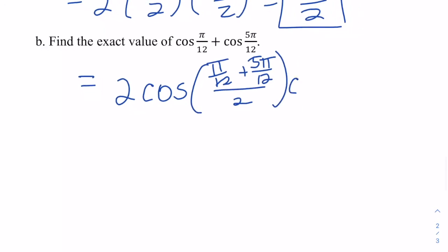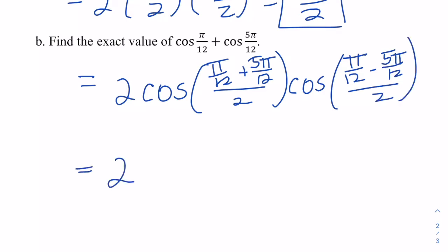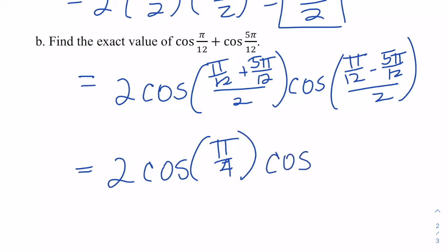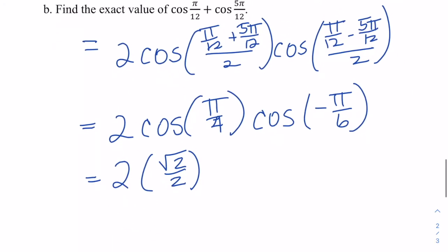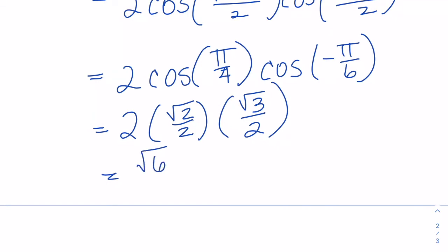Simplifying the angles: π/12 + 5π/12 = 6π/12 = π/2, divided by 2 gives π/4. For the difference: π/12 − 5π/12 = −4π/12 = −π/3, divided by 2 gives −π/6. So we get 2 times cosine of π/4 times cosine of −π/6. Cosine of π/4 is √2/2, and cosine of −π/6 is still positive at √3/2 (fourth quadrant). That gives us √6/2.